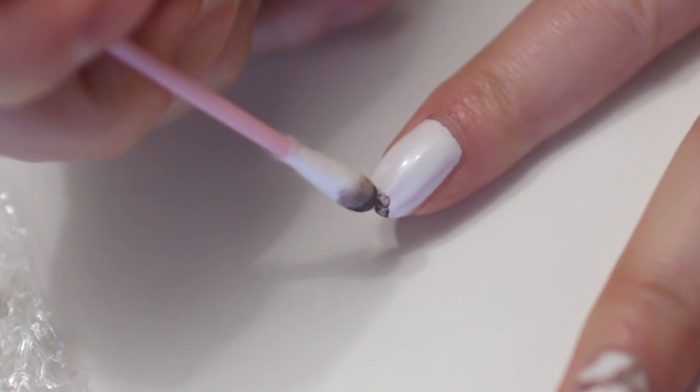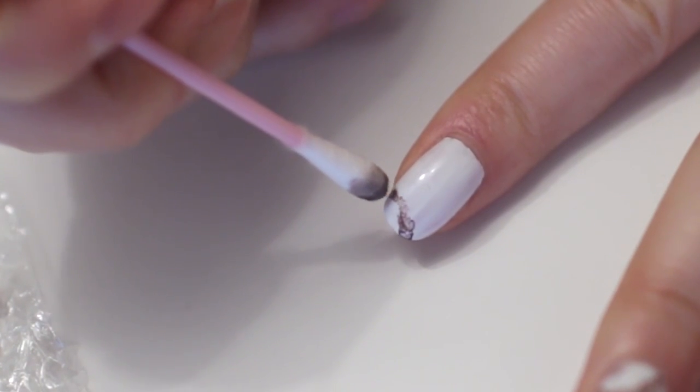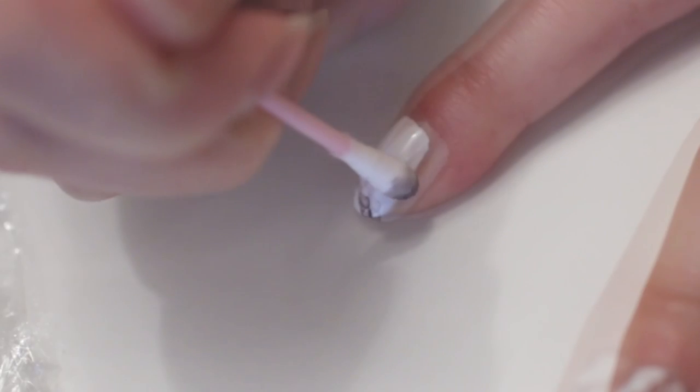Then you're gonna take grey or brown nail polish and make random lines with your q-tip. Make sure to use dabbing motion.